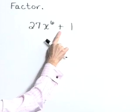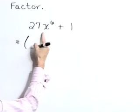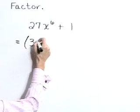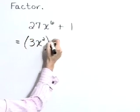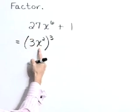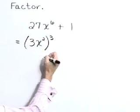Let's see if this fits the form of a sum of cubes. 27x to the sixth is indeed 3x squared quantity cubed. That's 3x squared times 3x squared times 3x squared gives that first term.